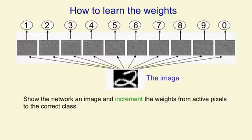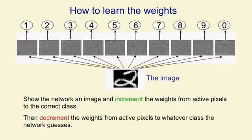So we need some way of keeping the weights under control, and what we're going to do is we're also going to decrement the weights from the active pixels to whatever class the network guesses. So we're really training it to do the right thing rather than the thing it currently has a tendency to do. If it does the right thing, then the increments we make in the first step of the learning rule will exactly cancel the decrements, and so nothing will change, which is what we want.